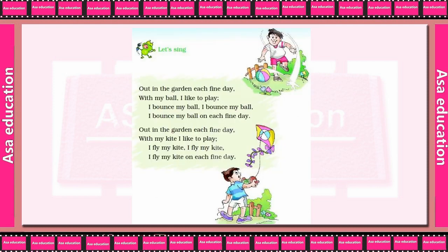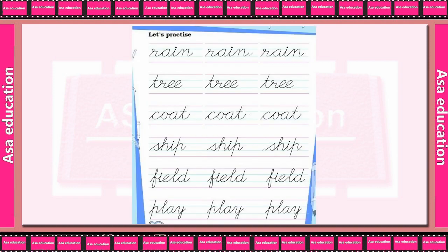Let's sing. Out in the garden each fine day, with my ball I like to play. I bounce my ball, I bounce my ball, I bounce my ball on each fine day. Out in the garden each fine day, with my kite I like to play. I fly my kite, I fly my kite, I fly my kite on each fine day.